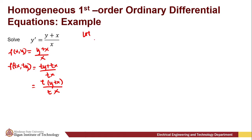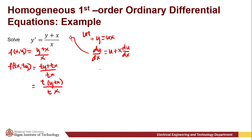We're going to use y = ux since our derivative is dy/dx. Substituting, dy/dx becomes u + x · du/dx. We substitute into our differential equation: u + x · du/dx = (ux + x) / x. Simplifying the right side by factoring out x, we get (u + 1).